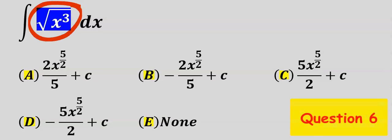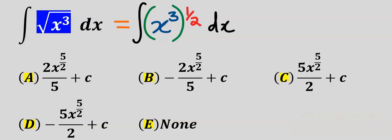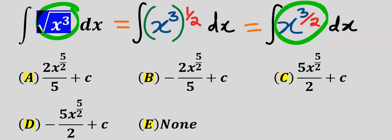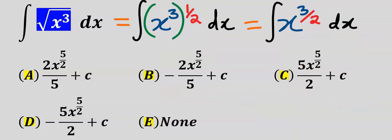Next let's integrate this function. Before we integrate we are going to rearrange: x to the power of 3 will remain; however, the square root of x to the power of 3 is the same thing as x to the power of 3 to the power of 1 over 2. We are going to integrate this rewritten form instead. Applying the power rule and solving correctly, this is our answer. From the options our answer is A.